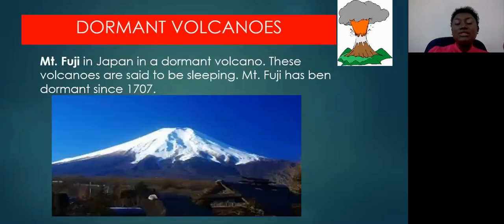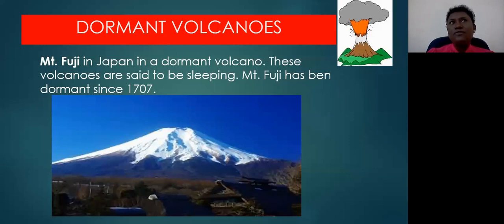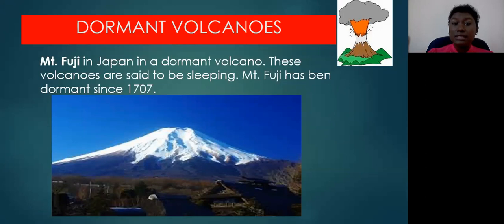Here you see a picture of Mount Fuji or Mount Fujiyama, located in Japan — an example of a dormant volcano. The word dormant means sleeping, so Mount Fujiyama is a sleeping volcano. The last time Mount Fujiyama erupted was in 1707. We're in 2020, so this volcano has been sleeping for a little over 300 years, making it a dormant volcano — like a sleeping giant.